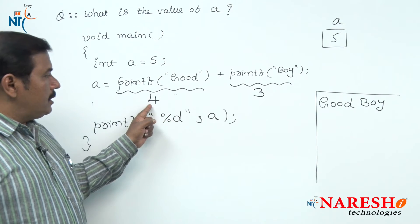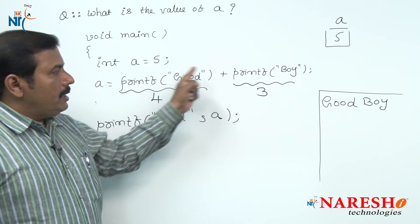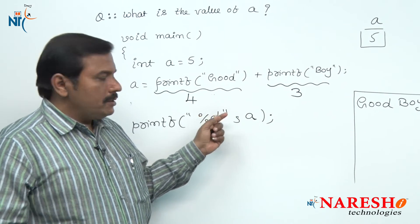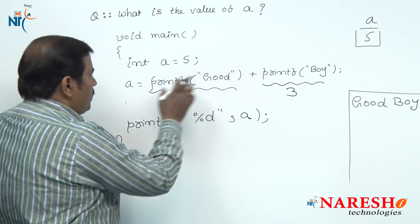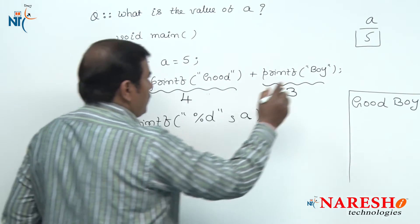Now finally, the values returned by these two printf functions are added: 4 plus 3 is 7. That obtained value is stored inside variable A.